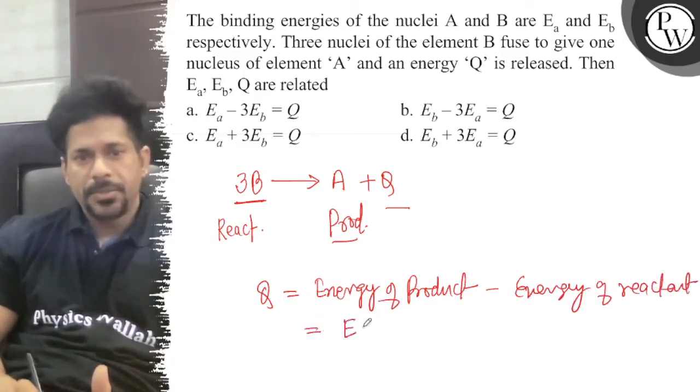So energy of product is EA, that is your EA, and minus thrice of EB, and that is equal to Q.